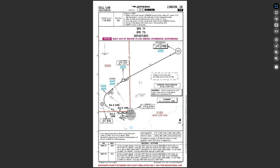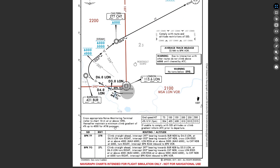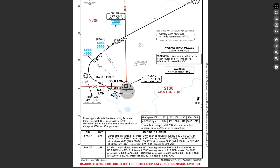Because this departure uses NDBs and VORs, you can actually fly this in a Cessna or other general aviation aircraft that doesn't have a navigation display or MCDU. But you also get more complicated RNAV routes that require GPS. Continuing down the chart: cross the appropriate noise monitoring terminal at or above 1,090 feet; thereafter maintain a minimum climb gradient of 4%. Here are your ground speeds and vertical speed per minute. If unable to comply with SID altitude climb gradient, inform ATC.